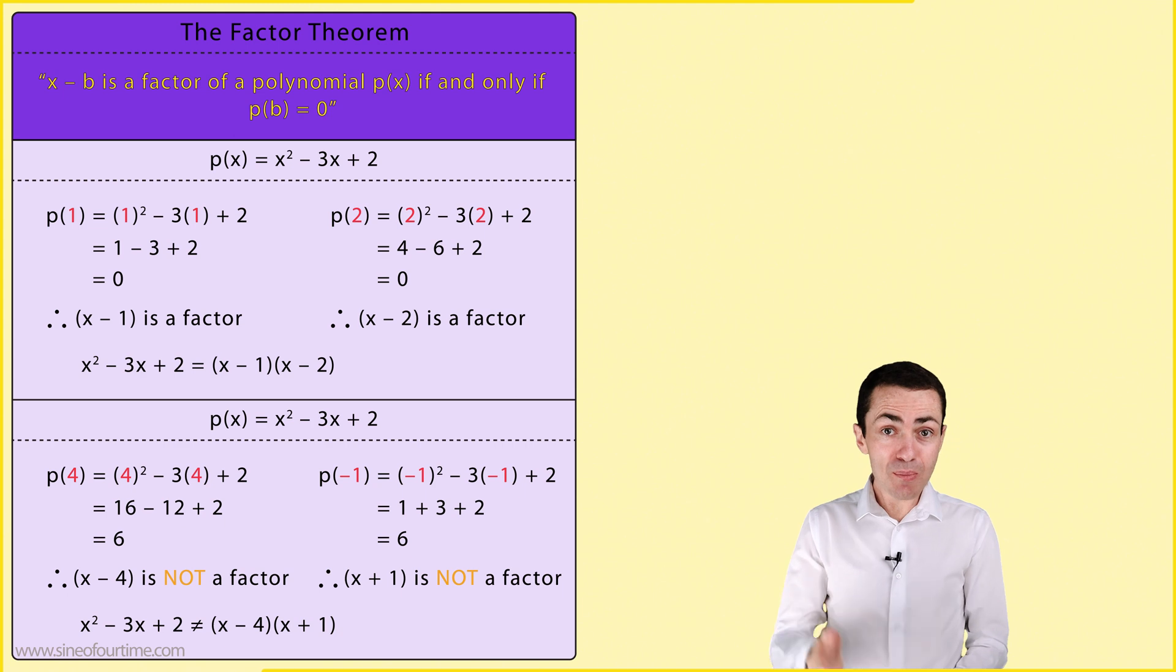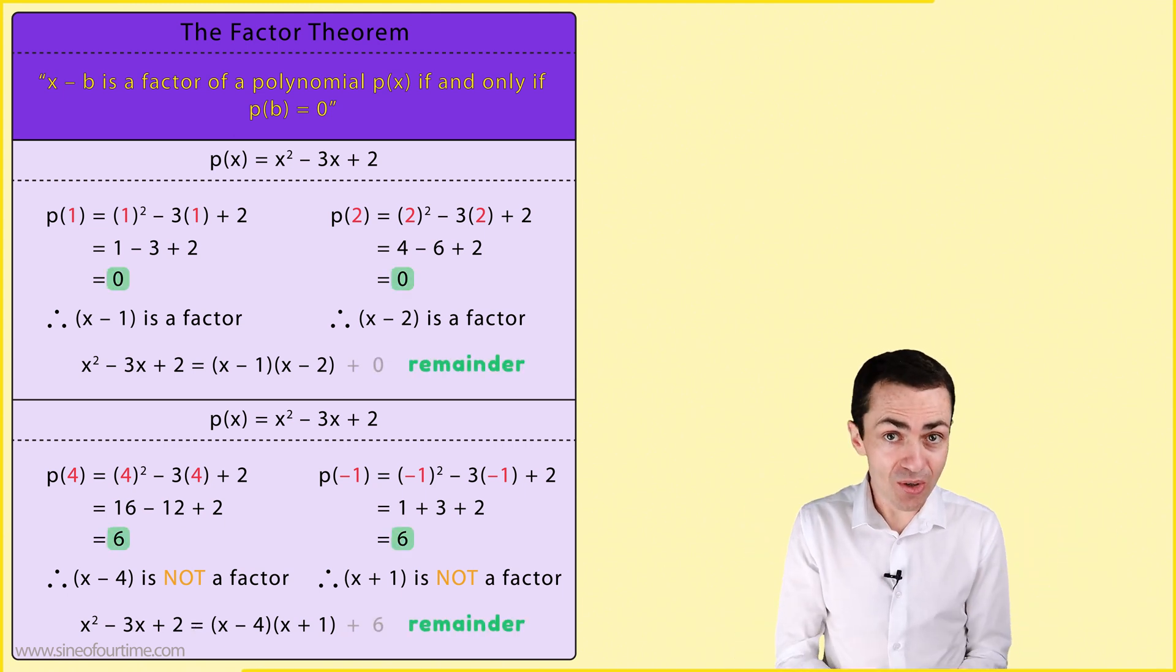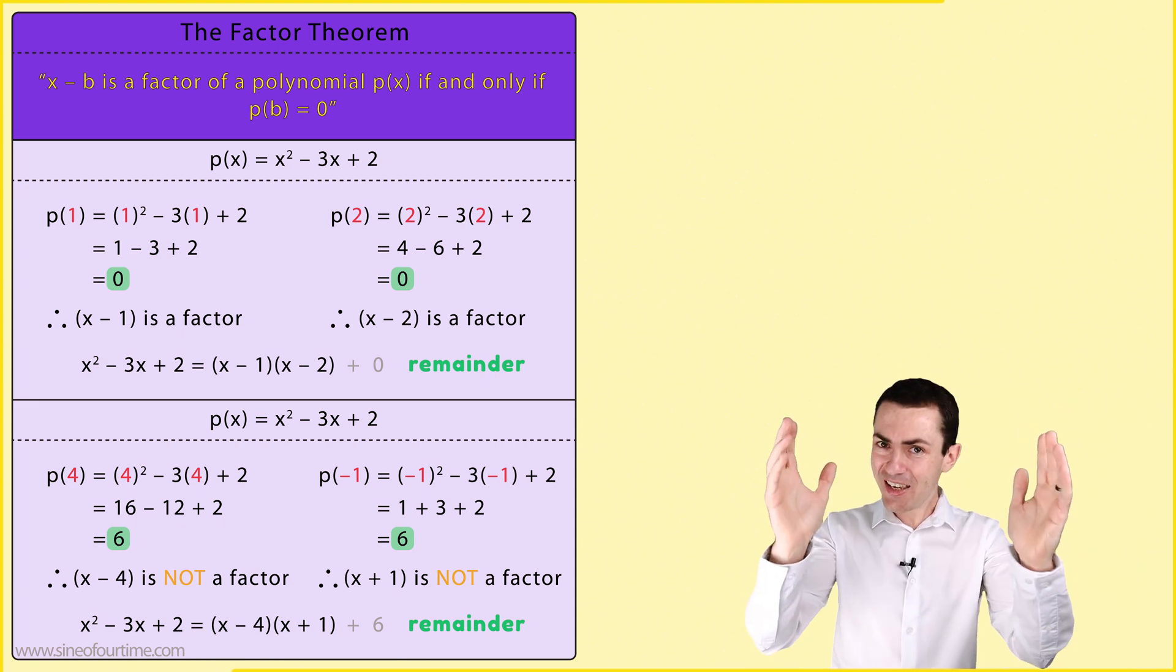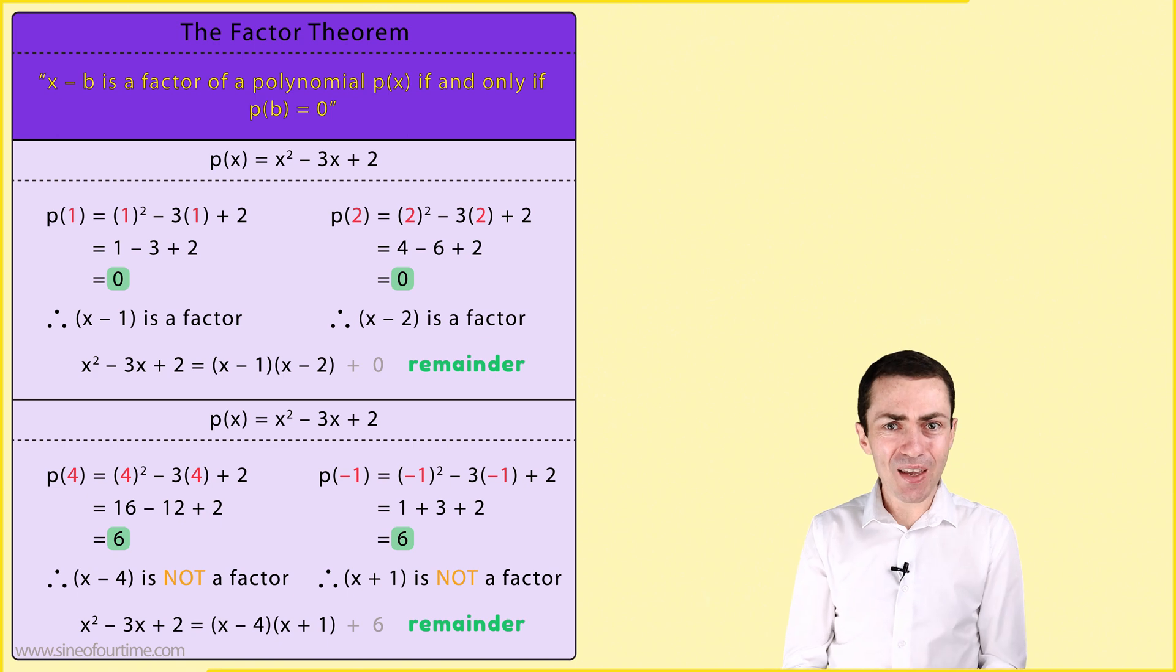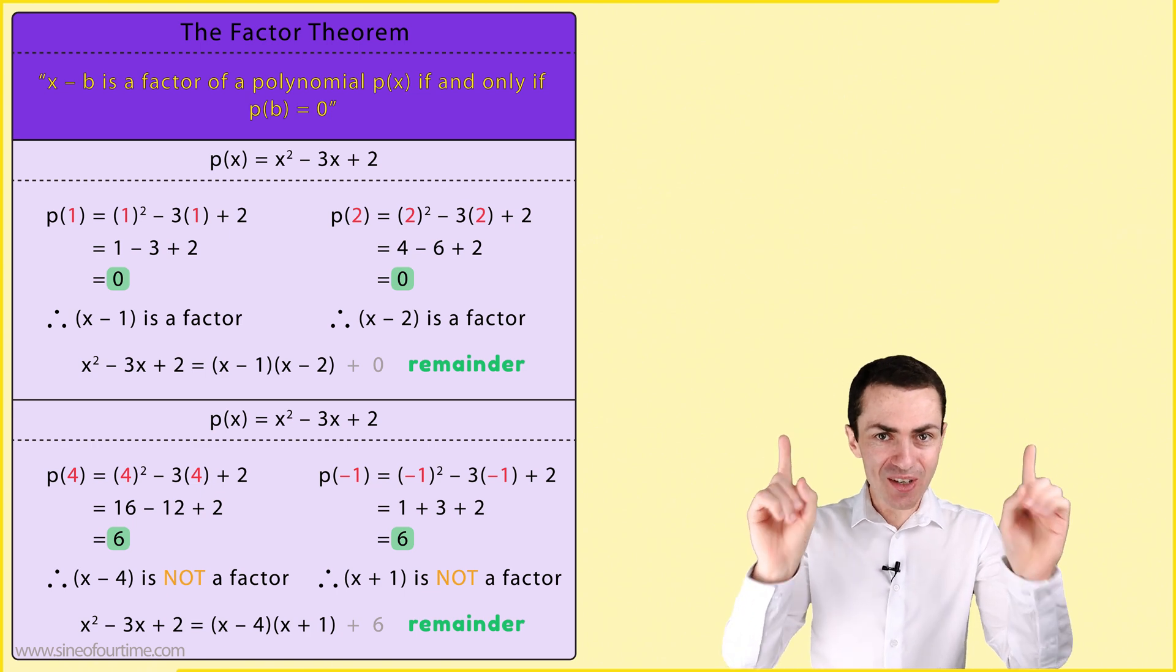Exactly what we established earlier. In fact, those numbers 0 and 6 represent the remainders according to the remainder theorem. Okay, so I hope that this introduction to the factor theorem makes sense to you. And if you'd like to learn more about the factor theorem and its uses, be sure to check out the next video in this series.